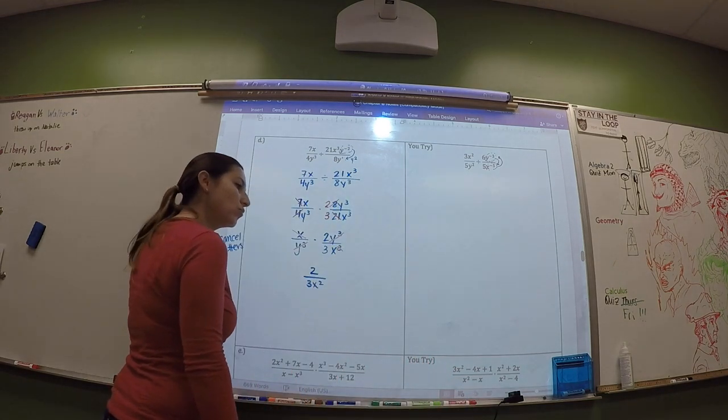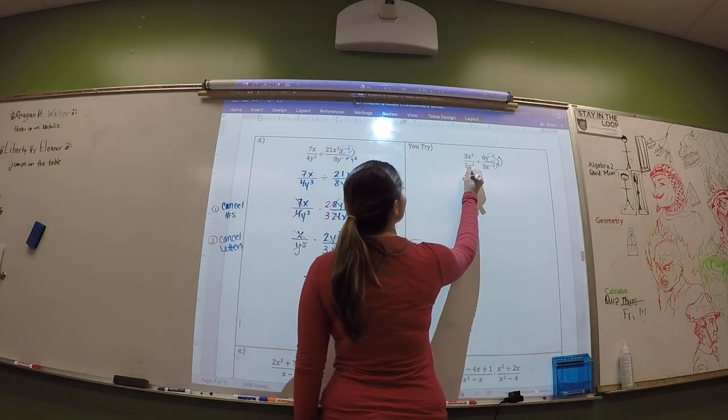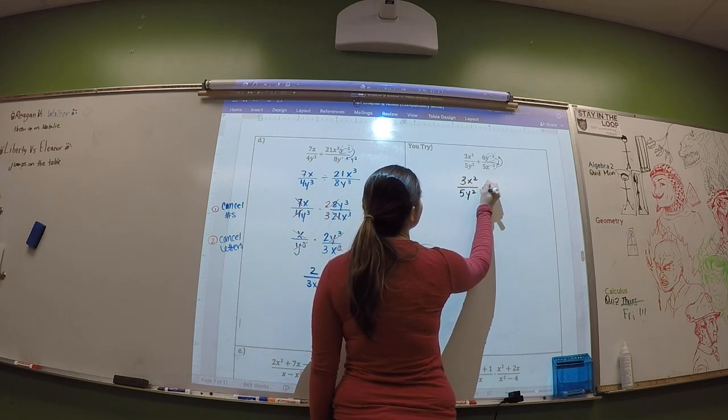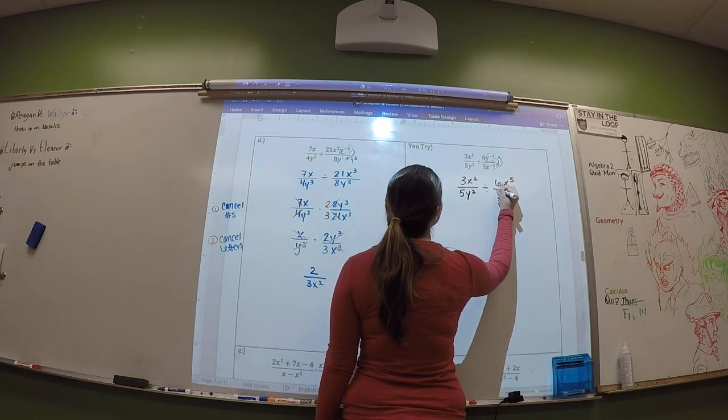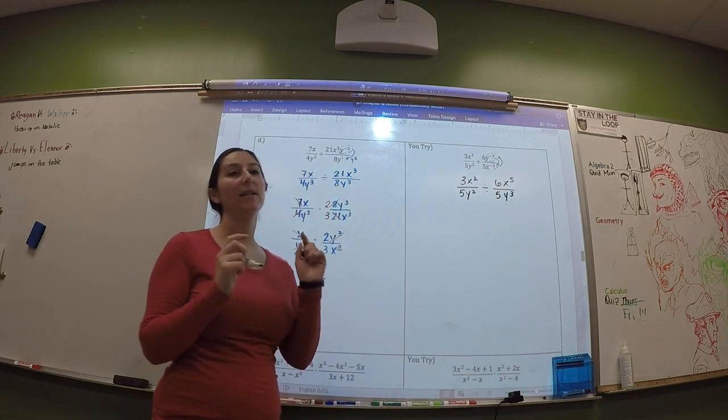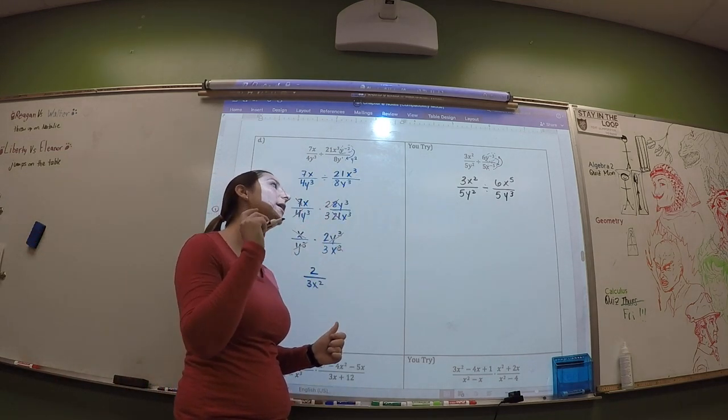So yeah, I simplified both of them, not realizing that it's a y and an x. So I got 6y² over 5x. How? I have no idea. Okay, so y is negative in the numerator, we put it in the denominator. x is negative in the denominator, we put it in the numerator.